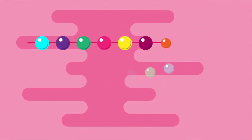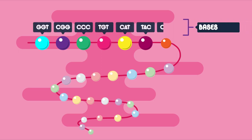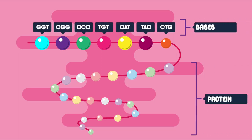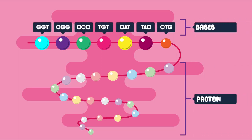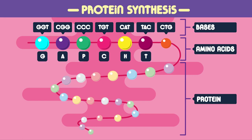Proteins are made of a long chain of amino acids, which has been coded for by DNA. The order of the bases of DNA determines which protein is made by coding for a specific order of amino acids. This is protein synthesis, and in this video we're going to look at how it works.